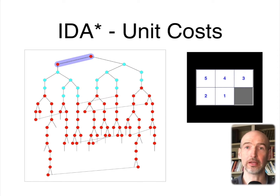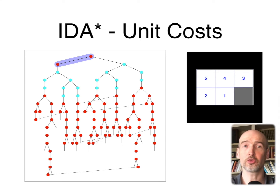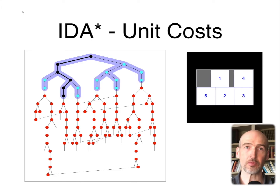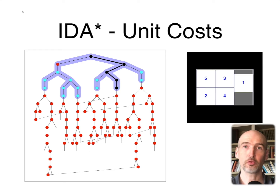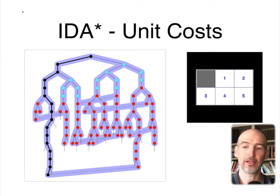This is an IDA* search tree. In this problem, we're going to show the equivalency between the search tree and the actual sliding tile puzzle on the right-hand side. The nodes highlighted in blue are the nodes that will be searched as part of the current iteration. The color of the nodes in the tree tells us what the F cost is. In this particular instance, we have three possible F costs in the tree. It's going to search in a depth first manner through the current tree and continue this process until it goes down and finds the goal on this branch. That's how IDA* works.